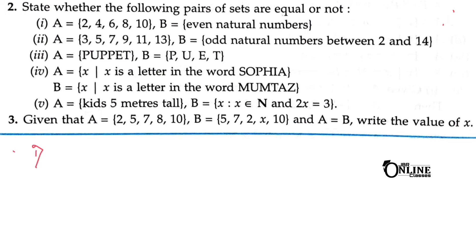Sum number 2: state whether the following pairs of sets are equal or not. First pair: A = {2, 4, 6, 8, 10} and B = even natural numbers. Even natural numbers are infinite, so A is not equal to B.